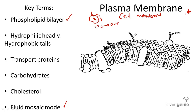Without the plasma membrane, the contents of the cell would not work as a system. Think of it like the bouncer at a concert. The bouncer, like this membrane, chooses who enters and who leaves the show, so that it runs smoothly.